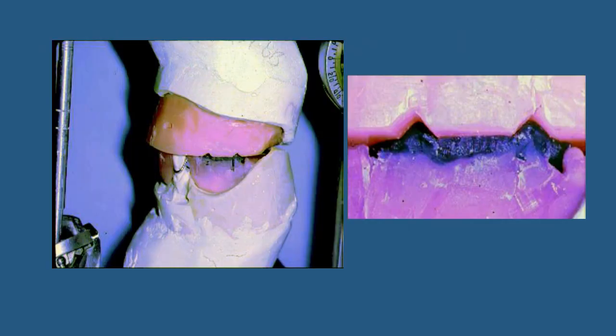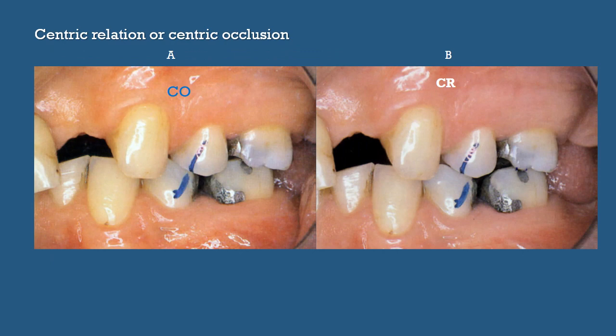An important step when making the inter-occlusal record entirely on occlusal rims — such as when you have a maxillary complete denture opposed by a removable partial denture — is to carve two grooves in the posterior part of the maxillary rim to be filled by the registration material. When the occlusal rim is removed from the patient's mouth, these grooves act as a guide to correctly reposition the occlusal rim on the articulator.